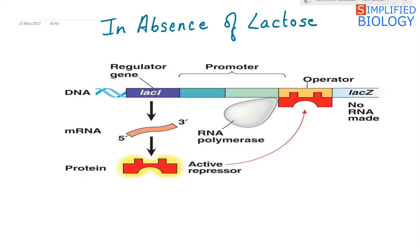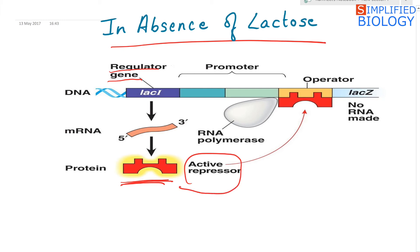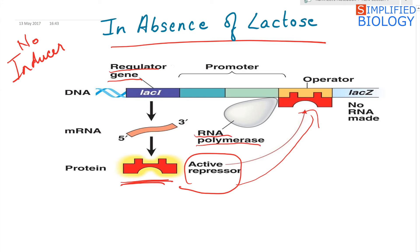In the absence of lactose, the repressor produced by the regulator gene is an active repressor which can bind to the operator. Since lactose is absent, there is no inducer. When the repressor binds to the operator, RNA polymerase cannot bind to the promoter, and there will be no transcription and translation of the structural genes.